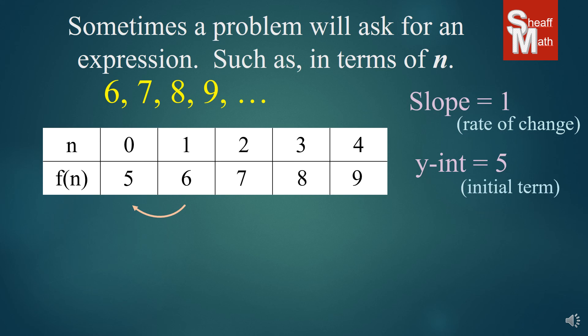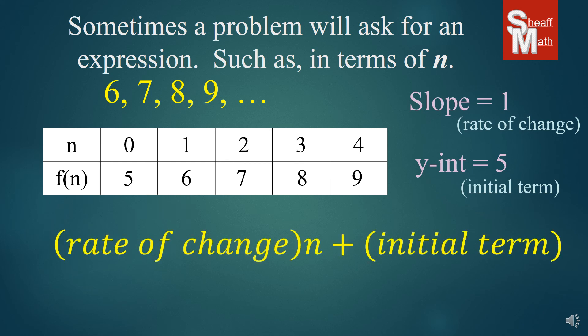So, how it wants us to present this is as just an expression, no equal sign. And it wants us to take the rate of change, which is 1, multiply it by n, and then add the initial term. So, in our case, we're going to have 1 times n plus 5. And when you have 1 times n, you don't have to put the 1. It's unnecessary. And so, this would be the expression that they're looking for. So, if you wanted to find the 100th term in this sequence, the 100th number, you would simply put 100 in for the n, add 5, and you would have 105. That would be the 100th term.